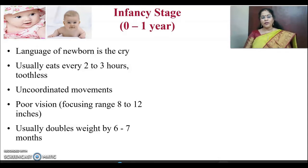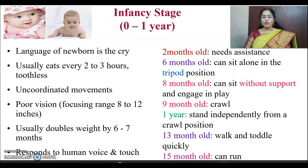Usually infants double their weight by six to seven months and triple their weight by one year. These children respond to human voice and touch. A two-month-old baby needs assistance for everything. But a six-month-old baby can sit alone in a tripod position. An eight-month-old baby can sit without support and engage in play. A nine-month-old baby can crawl, and a one-year-old baby can stand independently from a crawling position.